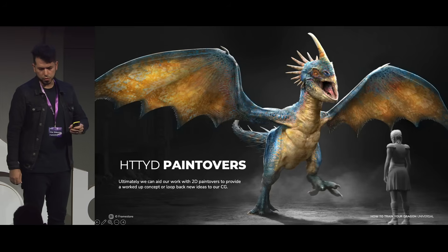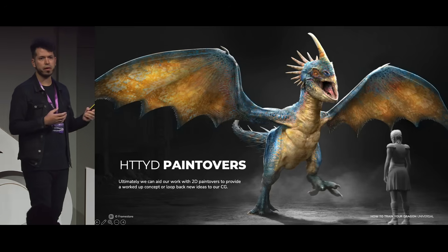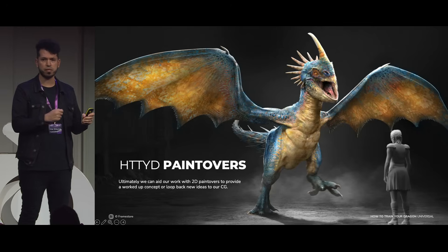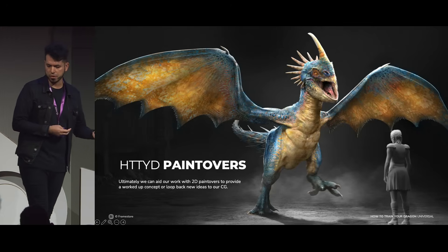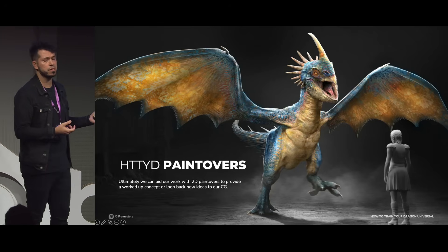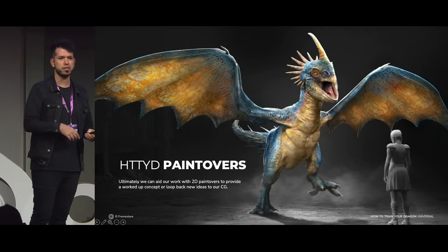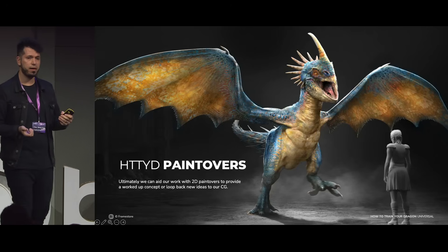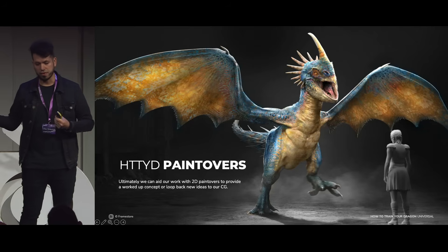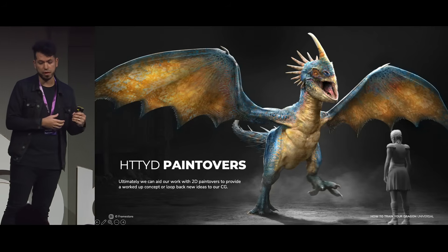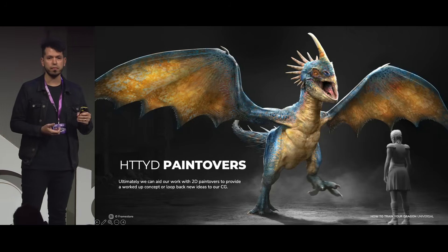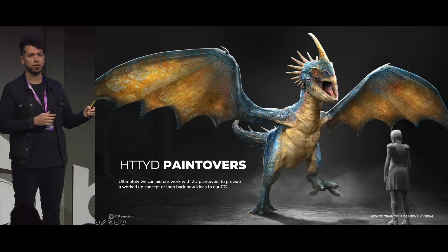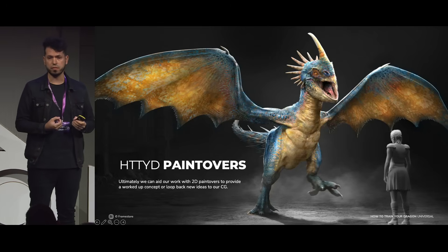One last thing we also do is paint overs. We can use our CG, and because we can pose these characters, we can do a 2D pass to explore even more quickly. This can help production solve questions, or we can use it internally to improve the CG and do the whole loop, then present a full turntable. I would like to highlight how important Blender is for us. As Stefan said, we are a very tiny team, and Blender allows three people to work on ten movies a year with a lot of influence on how the final result looks. And that, for us, is priceless.